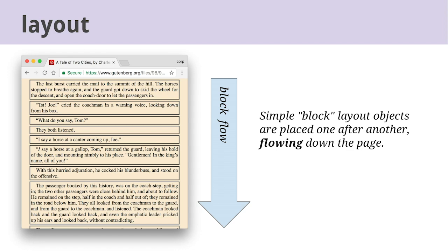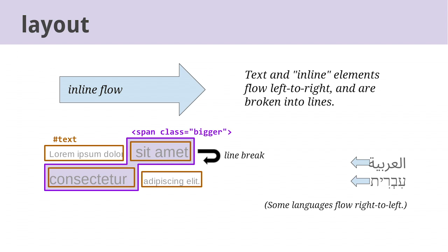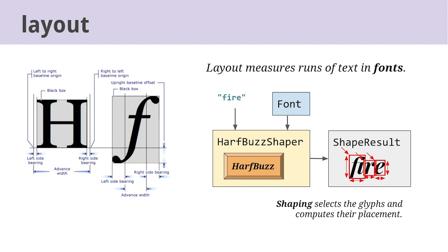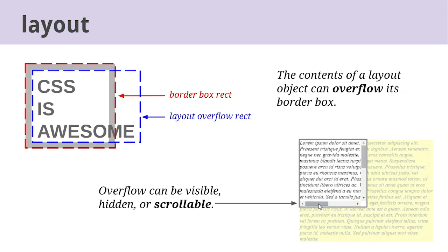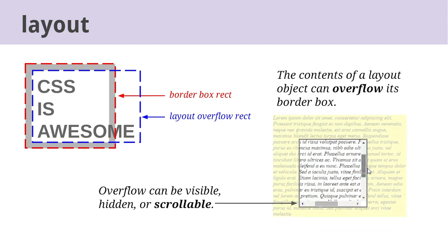In the simplest case, layout places blocks one after another in DOM order descending vertically — we call this block flow because the blocks flow down the page. The content inside a block is broken into lines, and individual runs of text and inline elements generate boxes within the lines. In Western languages, inline boxes flow left to right, but in languages like Arabic or Hebrew they flow right to left. To figure out where text runs start and end and where to break lines, we have to measure using fonts from the computed style. Layout uses a library called HarfBuzz to select glyphs corresponding to characters in the text and compute the size and placement of each glyph, accounting for things like kerning and ligatures. Layout also computes multiple kinds of bounding rects for a single element.